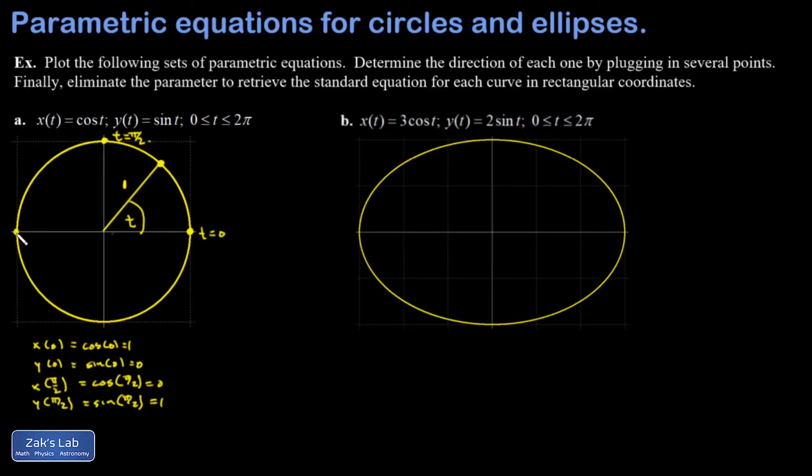I could proceed this way and find that when I plug in t equals pi, I end up over here on the left at the point negative one zero. When I plug in t equals three pi over two, I end up at the bottom at the point zero negative one. Finally, when I get to t equals two pi, I'm back where I started. So we've determined a directionality here—this curve is being traced out counterclockwise as t increases.